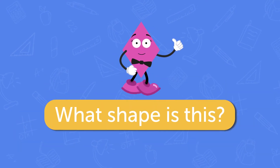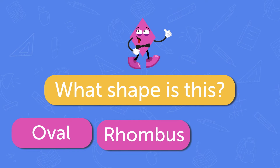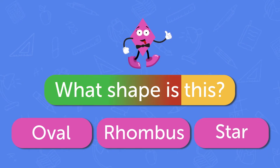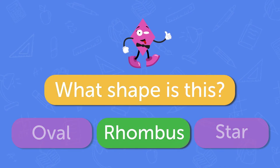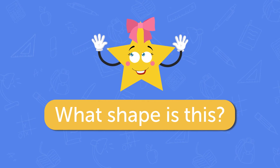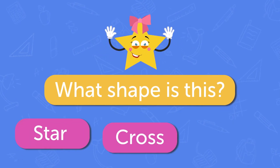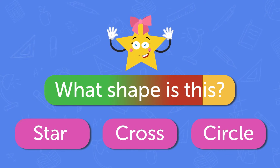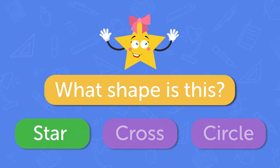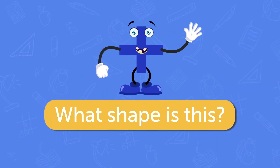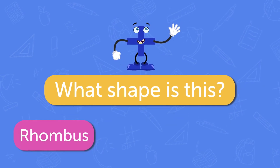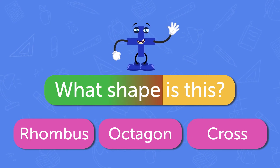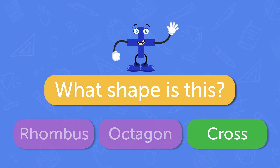What shape is this? Oval, Rhombus, Oval. Rhombus. What shape is this? Star, Cross, Circle. Star. What shape is this? Rhombus, Octagon, Cross. Cross.